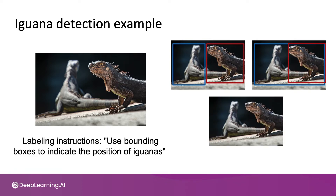A third labeler may say, well, I'm going to look through all hundreds of images and label them all, and I'm going to use bounding boxes to indicate the position of iguanas and draw a bounding box like that. Three diligent, hardworking labelers can come up with these three very different ways of labeling iguanas. Maybe any of these is actually fine — I would prefer the top two rather than the third one. But any of these labeling conventions could result in your learning algorithm learning a pretty good iguana detector. What is not fine is if one third of your labelers use the first, one third the second, and one third the third labeling convention, because then your labels are inconsistent, and this is confusing to the learning algorithm.